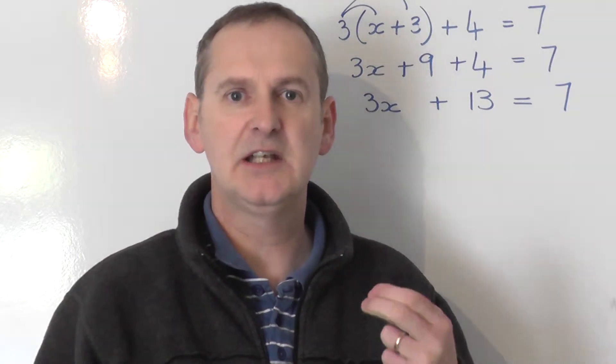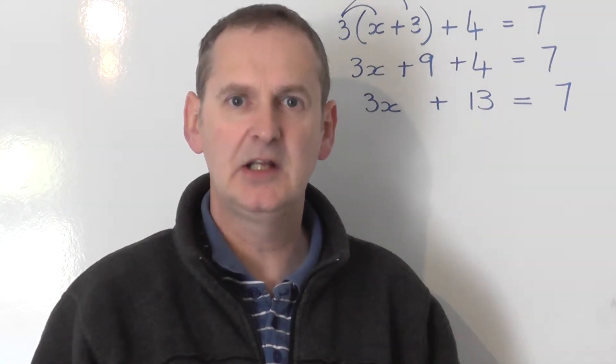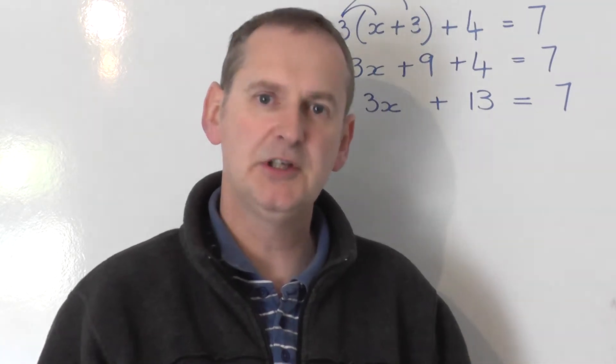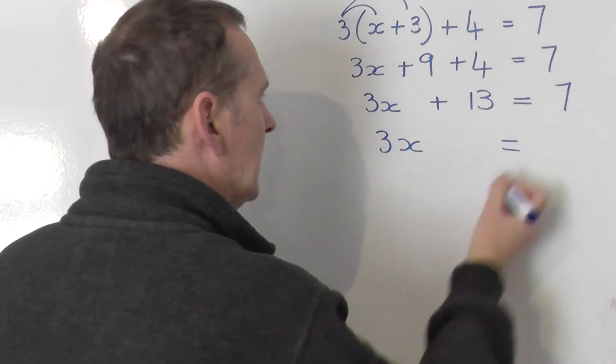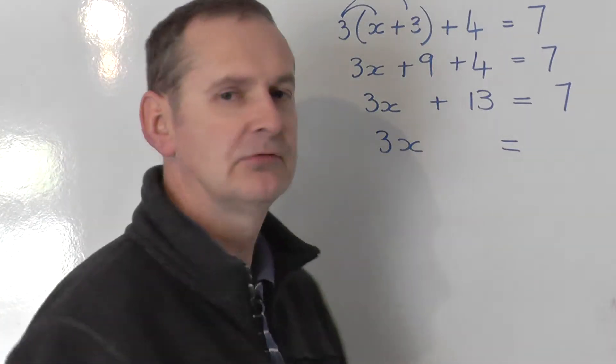What I'll do now is collect the x's on their own on one side and all the number terms on the other side. So 3x I'm going to leave on the left hand side. I'm happy with it on the left. And the numbers go to the right.